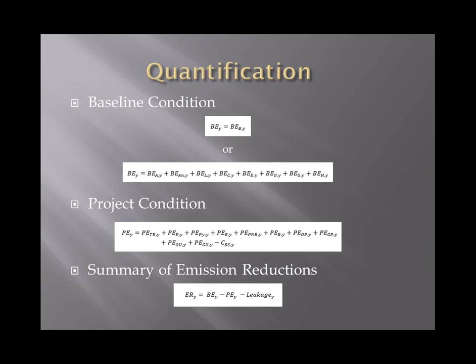Under the project condition, these are things we can typically measure and monitor during the operational project. They're all labeled PE except for the last one — which is how much is sequestered as carbon within the biochar. This is the crux of the protocol in some ways, and we'll go into that in a bit of detail separately.